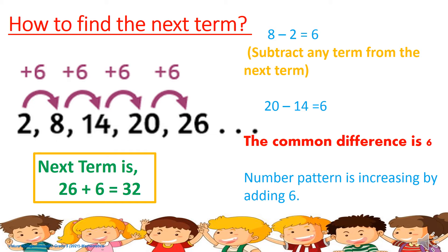Check that with another two numbers: take 14 and 20. Subtract 14 from 20 — you get 6 again. So 6 is constant; it is not changing. The number pattern is increasing by adding 6 each time. To find the next term, add 6 to the last number, which is 26. So 26 plus 6 is 32 — that is the next term.